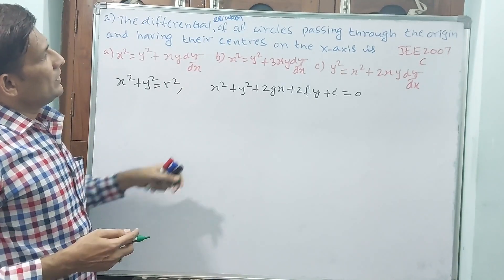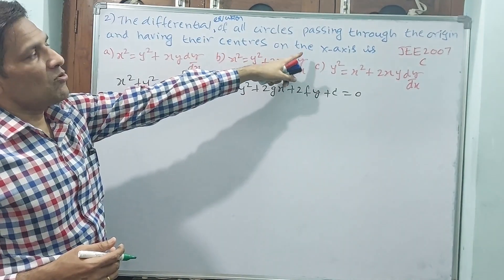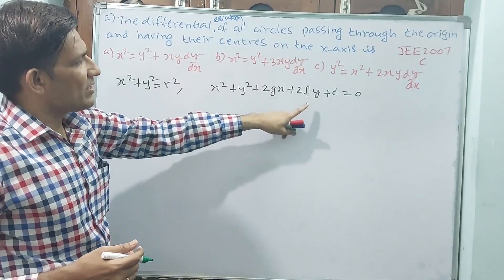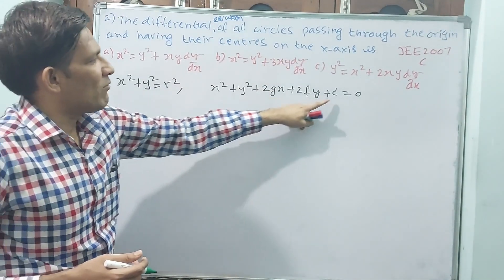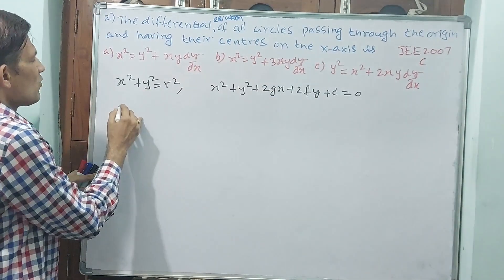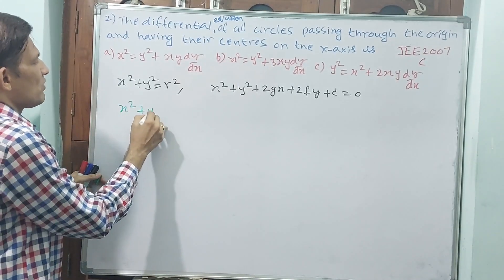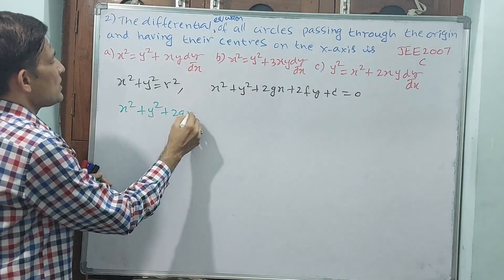Okay, now passing through the origin and on the x-axis, y is 0. That means I want to cancel these two. You see now equation is going to be like this: x² + y² + 2gx = 0.